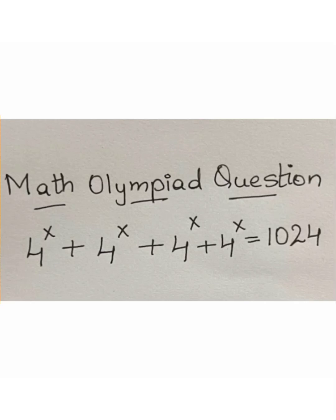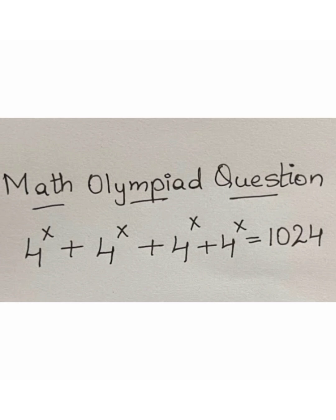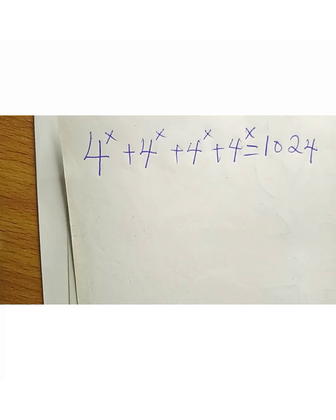Hello friends, welcome. We are asked to solve this nice Olympiad math question: 4^x + 4^x + 4^x + 4^x = 1024.